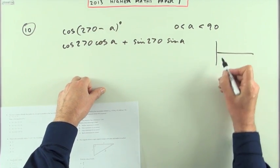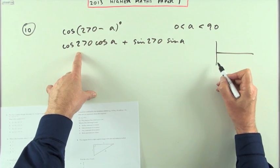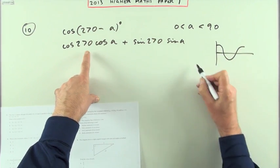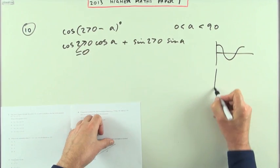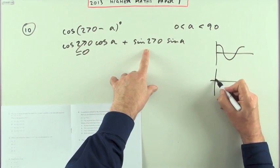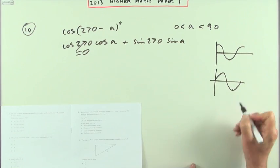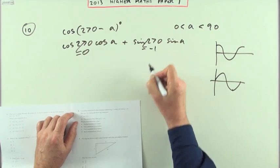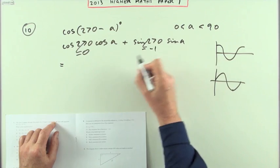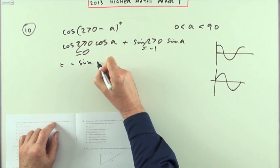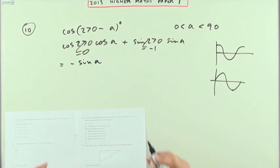Cosine looks like this and at 270 it's going to be zero, so that part goes to zero. The sine graph looks like this. At 270 it's down here, so this part's going to come to negative one. This whole thing will simplify to just minus, so it'll come to negative sine of a, which is D.